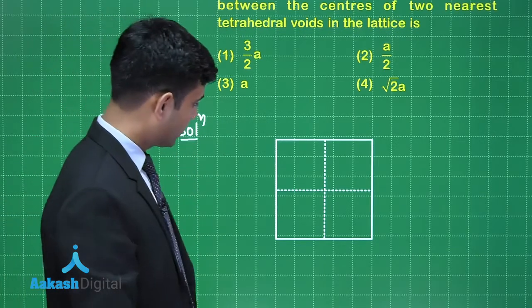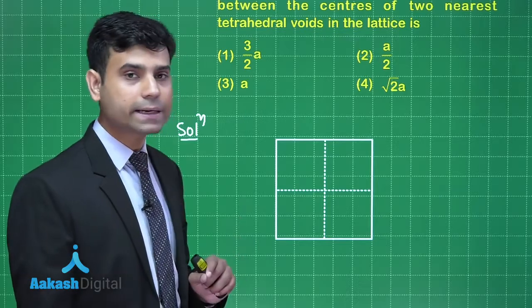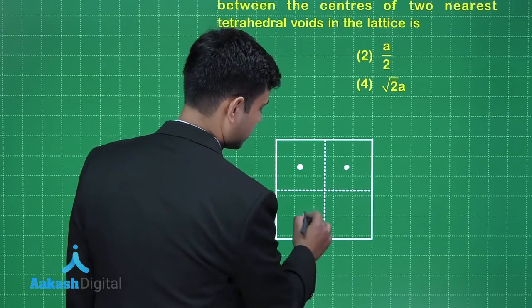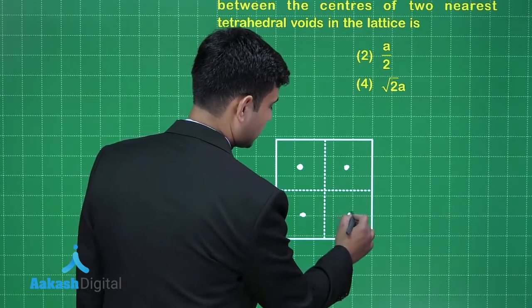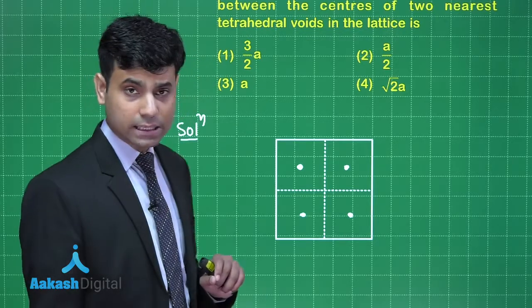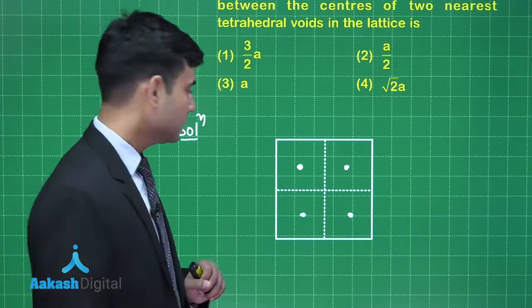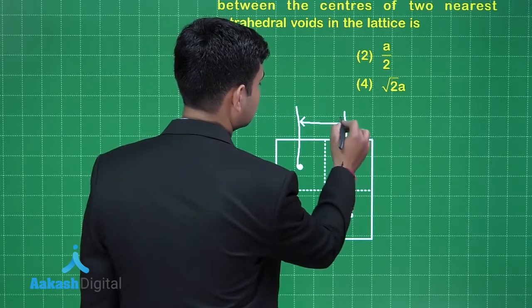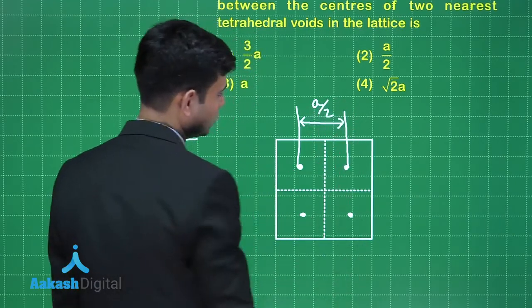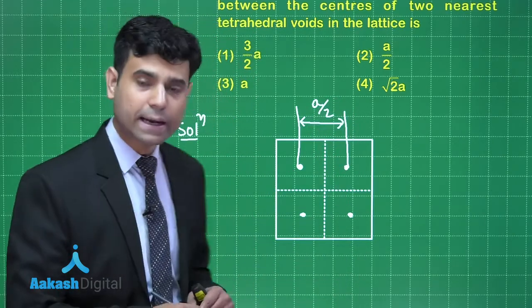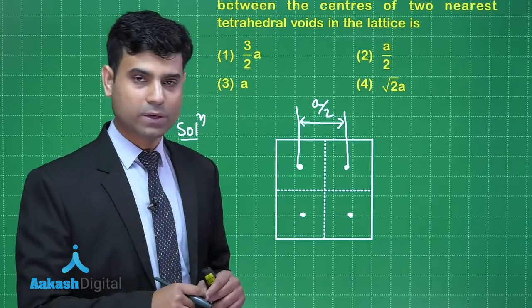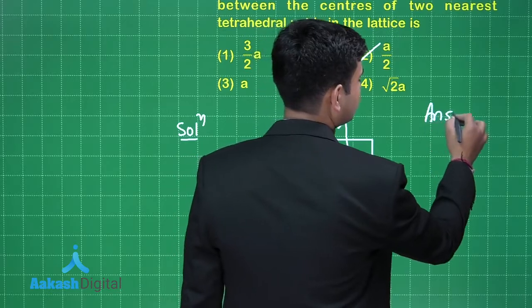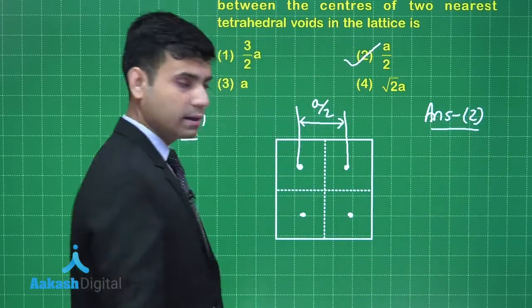In the top view, the tetrahedral voids will be at the center of each octant. Assuming the edge length equal to 'a', the distance between these two tetrahedral void positions will be a/2. So the correct answer for this question is option 2.